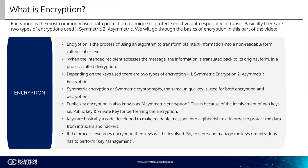What is encryption? Encryption is the most commonly used data protection technique to protect sensitive data, especially in transit. Basically, there are two types of encryption used: symmetric and asymmetric. We will go over the basics of encryption in this part of the video. Encryption is the process of using an algorithm to transform plain text information into a non-readable form called ciphertext. When the intended recipient accesses the message, the information is translated back to its original form in a process called decryption.